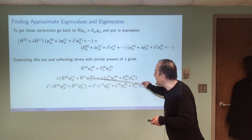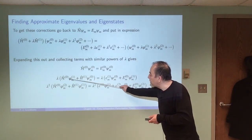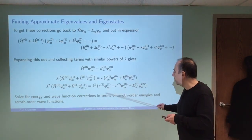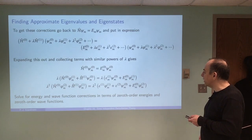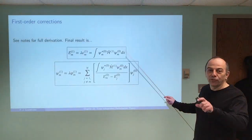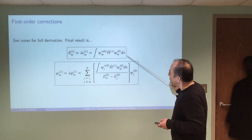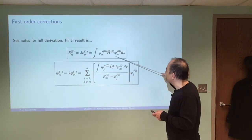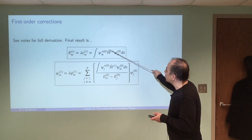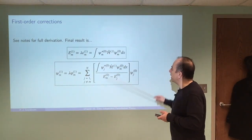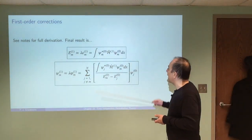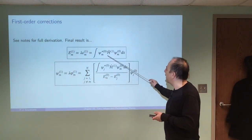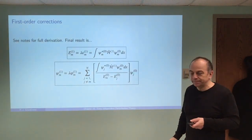Taking the first-order term and solving for the correction to the wave function and the correction to the energy, the full derivation is in the notes. You find that the first-order correction to the energy — which is lambda times epsilon — is given by a sandwich integral of H1, the perturbation, between the m-th eigenstates of the unperturbed Hamiltonian. This gives the energy correction to first order for having this perturbation present. That's pretty simple.